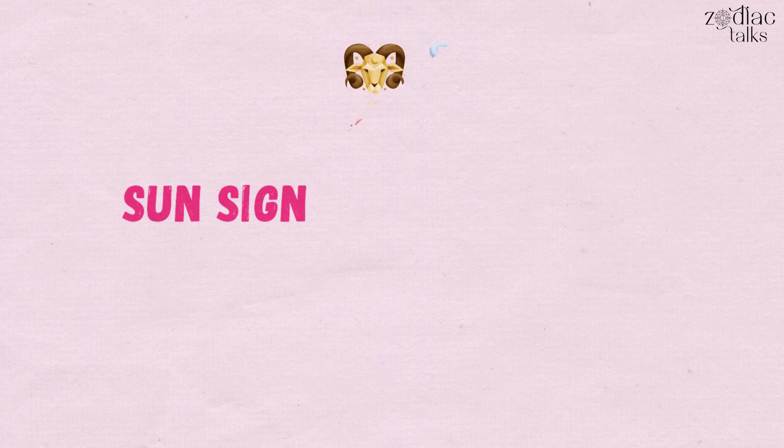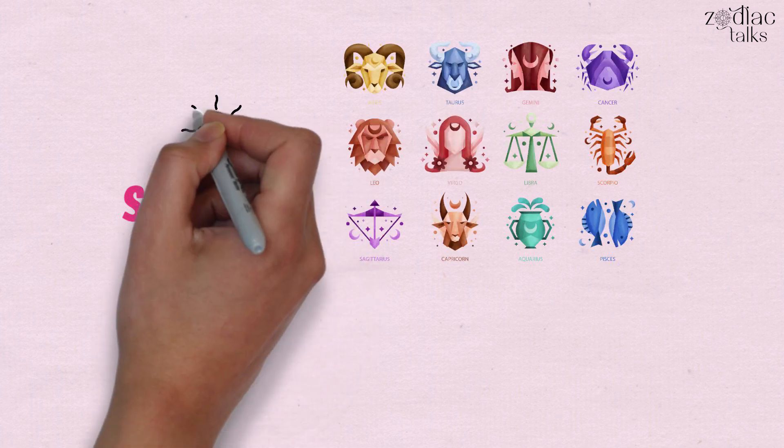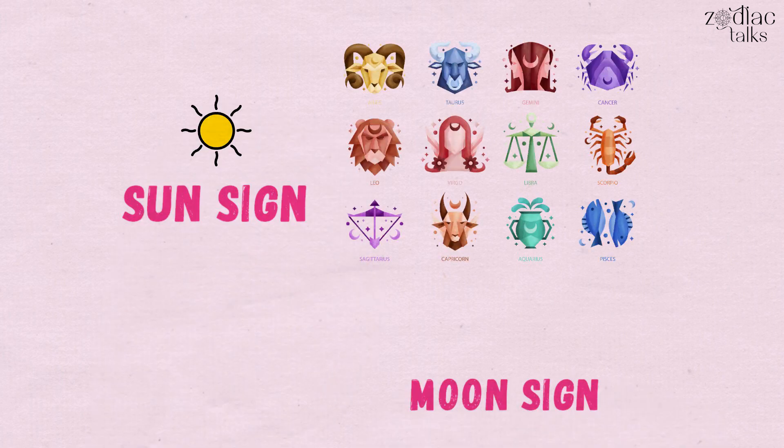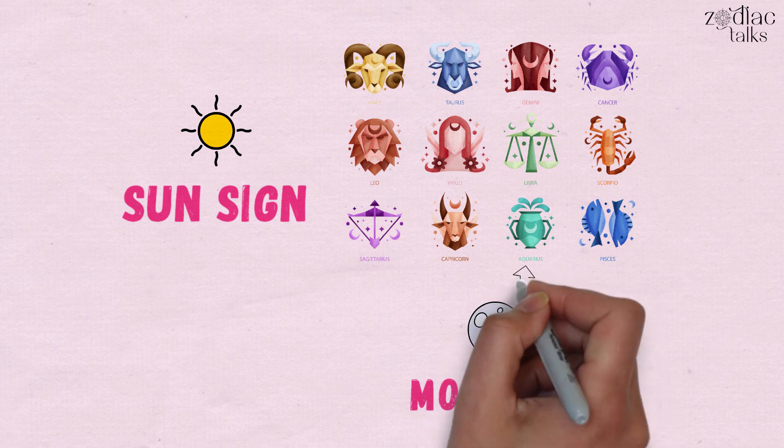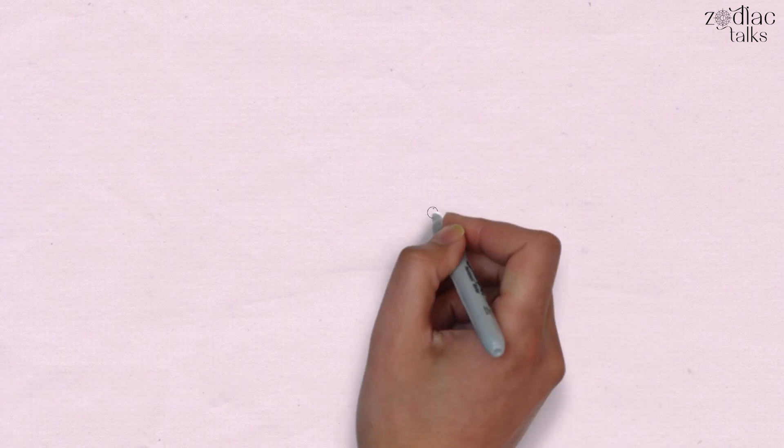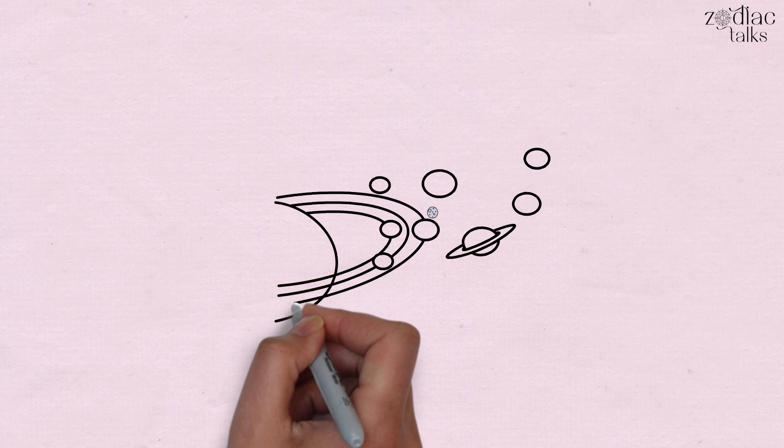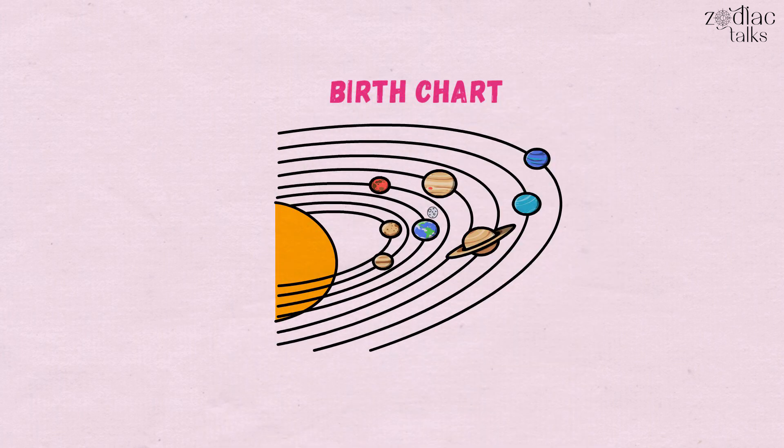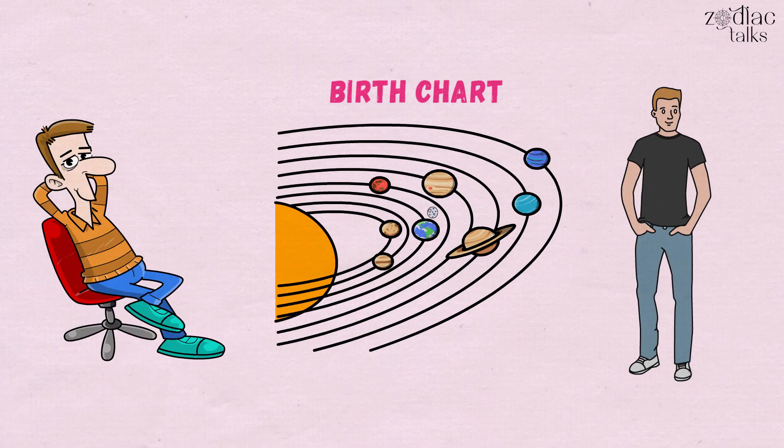Just like your sun sign is determined by the placement of the sun at the time of your birth, your moon sign is determined by the position of the moon in a zodiac sign when you were born. These signs, along with the other placements in your birth chart, define your personality traits and how you're expected to live your life.